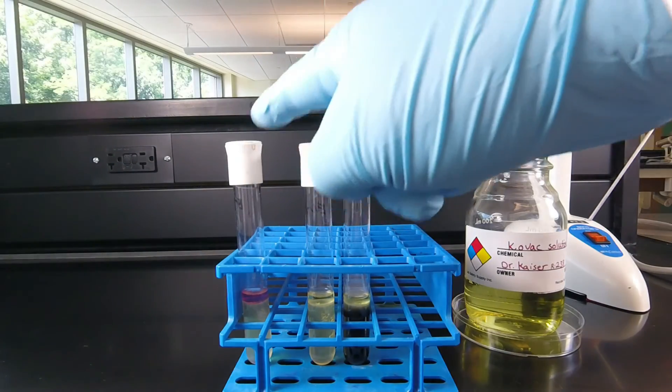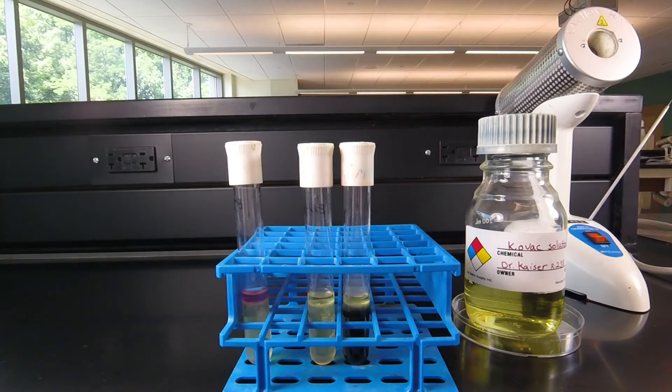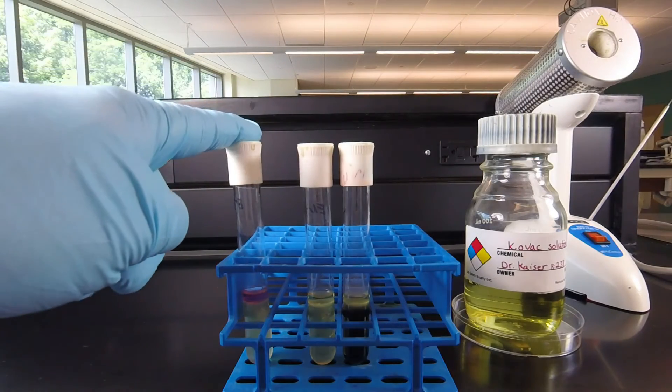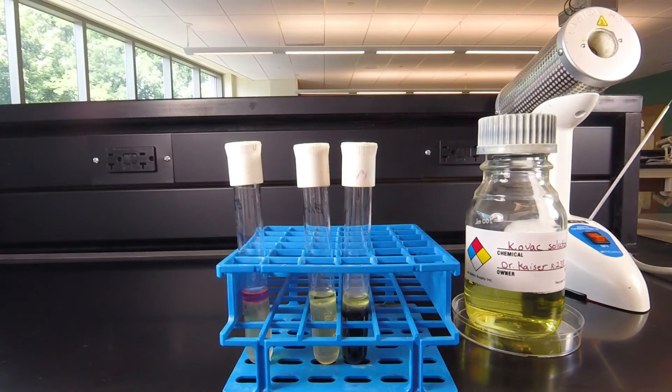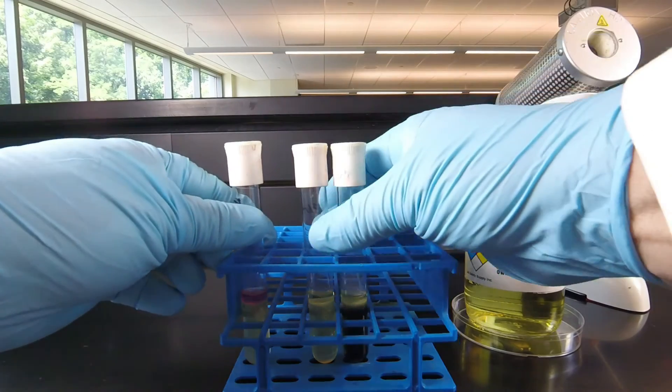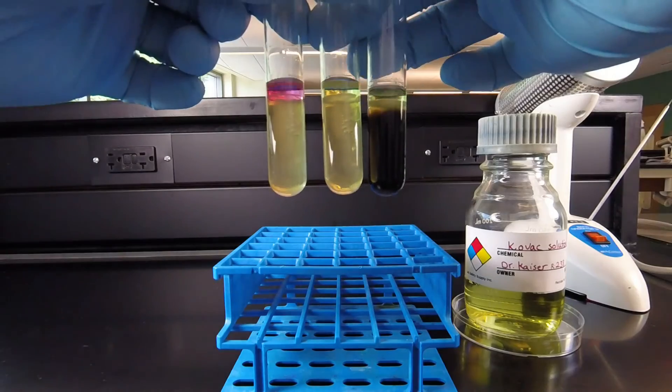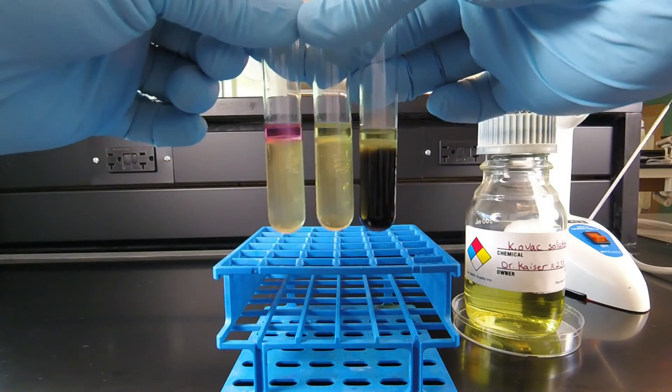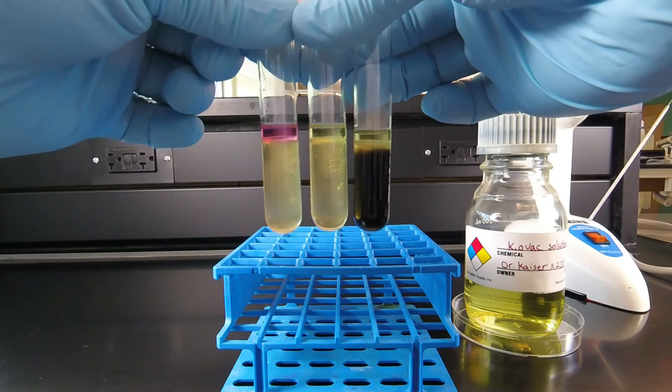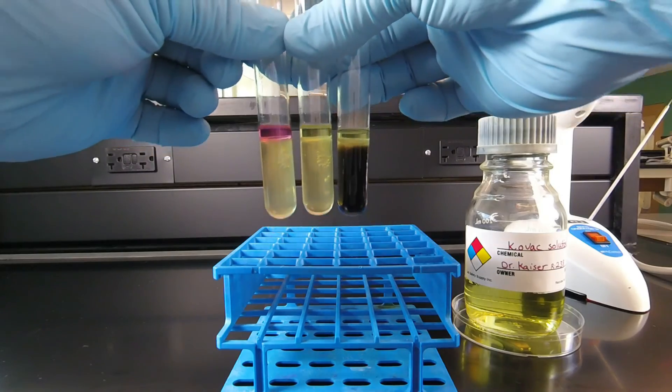So we had three different gram-negative bacilli that we inoculated: Escherichia coli, Enterobacter cloacae, and Proteus mirabilis. Although they are all gram-negative rods that look identical under the microscope, we see different combinations of test results, indicating that different bacteria, because they have different DNA, will produce different enzymes and different biochemical reactions.